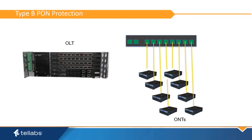Tellabs supports the G.984.1 Type B PON Protection on all OLTs and ONTs. This allows the user to fully protect the PON side of the network in a cost-effective manner. Type B Protection makes use of a splitter that allows for two inputs on the OLT side of the PON span, giving both equipment and facility protection for the OLT side of the PON.